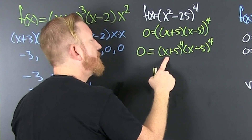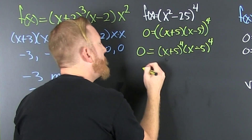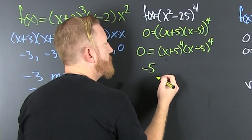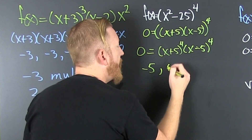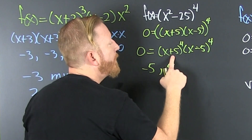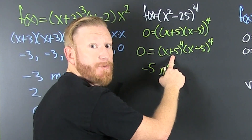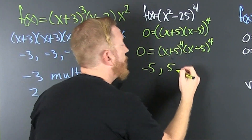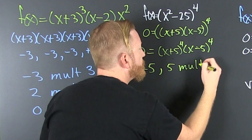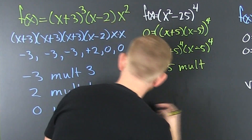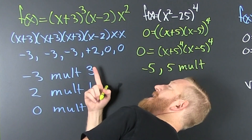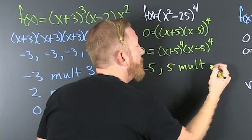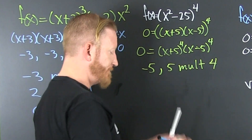So here we see that -5 and 5 are both multiplicity 4. We don't have to write it out — multiplicity 4.